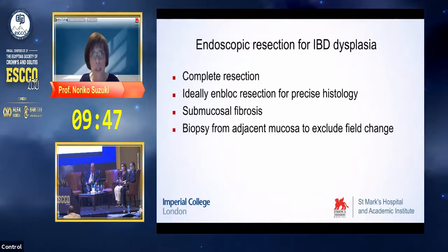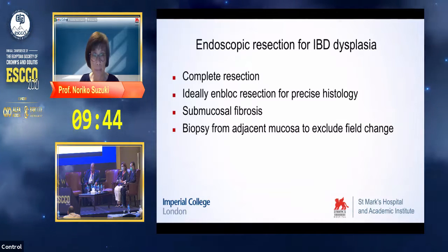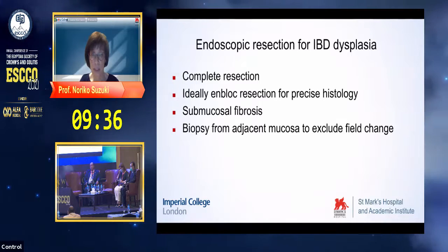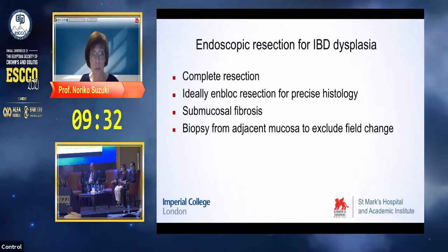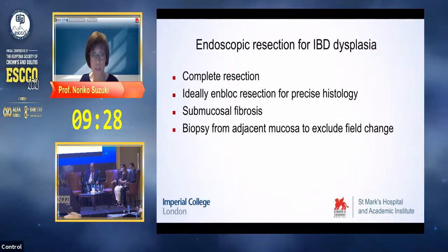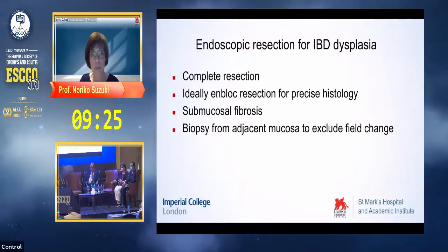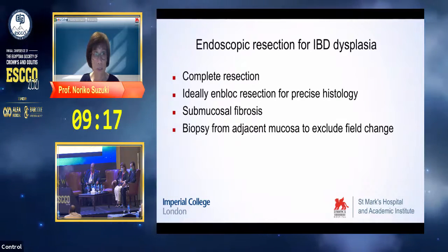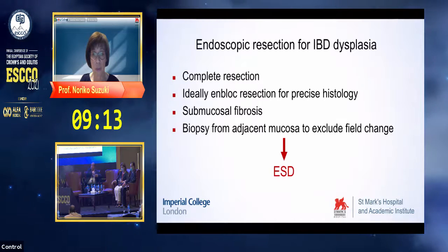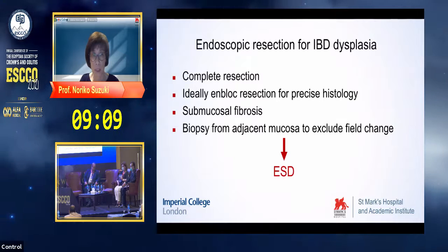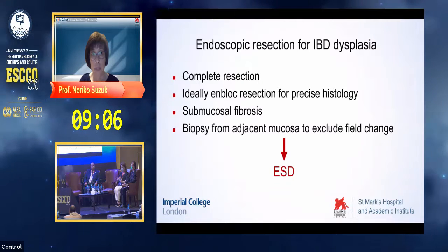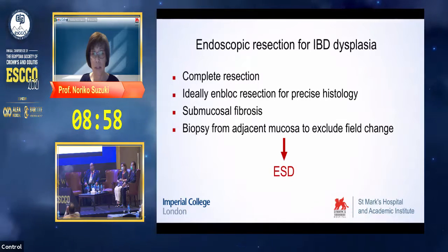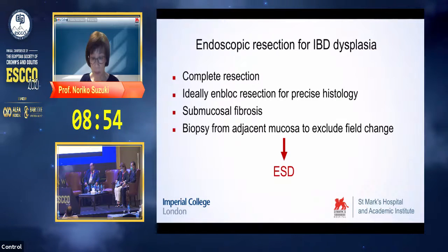Now let's move on to endoscopic resection for IBD dysplasia. What we need is complete resection — ideally en bloc resection for precise histopathological examination. IBD dysplasia normally has fibrosis from ongoing inflammation. Sometimes biopsies from adjacent mucosa to the endoscopic resection are needed, to assess if there is a field of change. Thinking about these factors, endoscopic submucosal dissection would be the best approach, because ESD can treat submucosal fibrosis and provide en bloc samples. If we can include a normal margin, we can omit biopsies from adjacent mucosa.